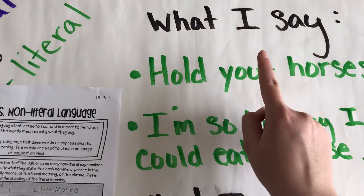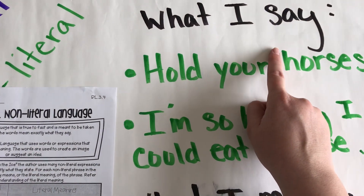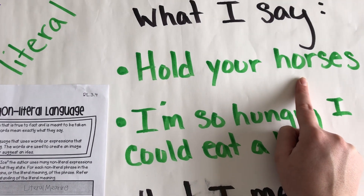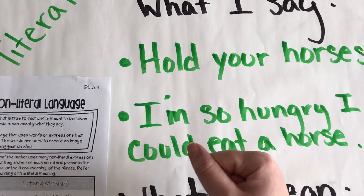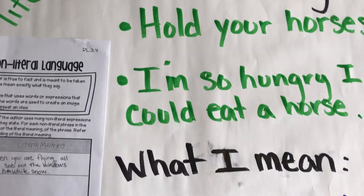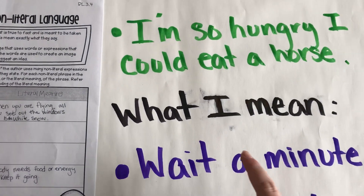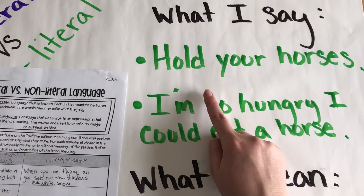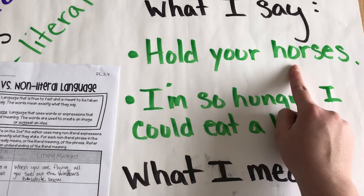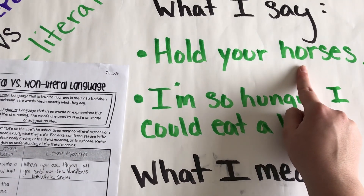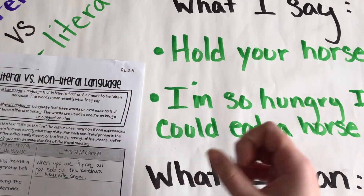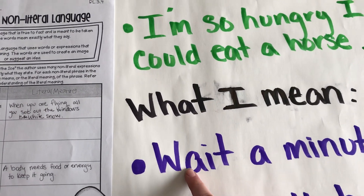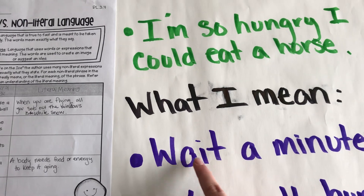So when I say something like "hold your horses," I'm not really telling you to go outside and find some horses and grab them and hold on to them. What I actually mean is, can you wait a minute? Maybe you have some rowdy horses and in your mind you're grabbing onto them and you're trying to make them calm down. That's what I mean — can you just wait a minute?